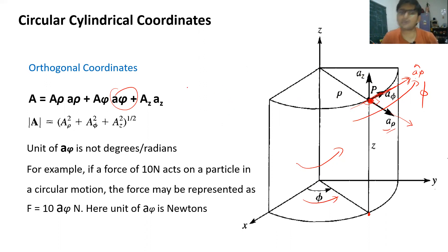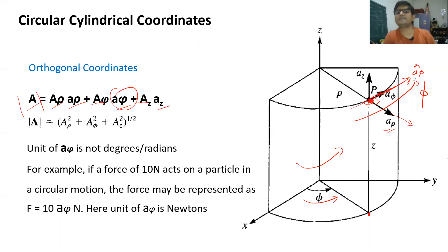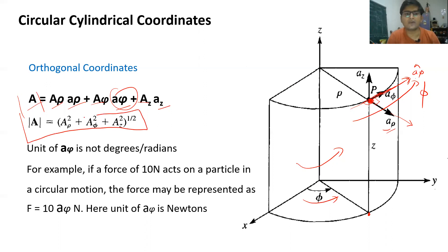For any orthogonal coordinate system, if you represent a vector using three orthogonal coordinates, the magnitude of that vector is always the square root of the sum of the squares of each individual component. This formula holds true for all kinds of orthogonal systems.